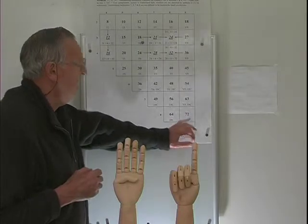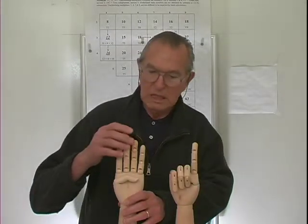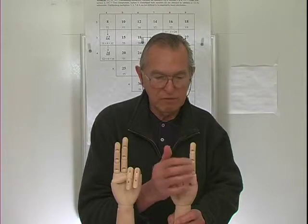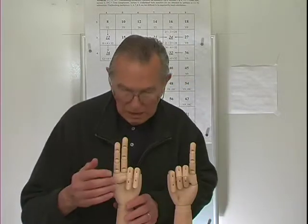8 times 9. This hand is already 9. I want to make the other hand an 8, so I'm going to put two fingers down, counting 9, 10. This represents 8 times 9. Multiply the open fingers: 1 times 2 is 2, so 2 is the ones place. Add the closed fingers: I get 4 on this side and 3 on this side. 4 and 3 is 7. So 8 times 9 is 72.